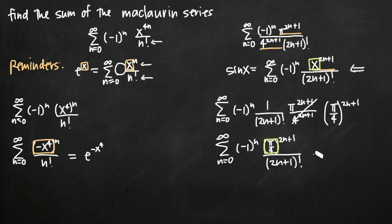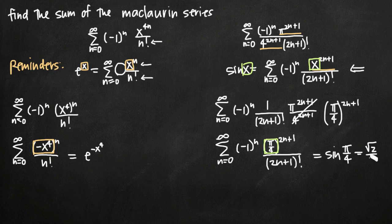The sum of our series is equal to sine of pi over 4. We could leave it like this, but we know that sine of pi over 4 is equal to root 2 over 2, as seen from the unit circle. So our final answer is root 2 over 2, and that is the sum of the original series we were given.